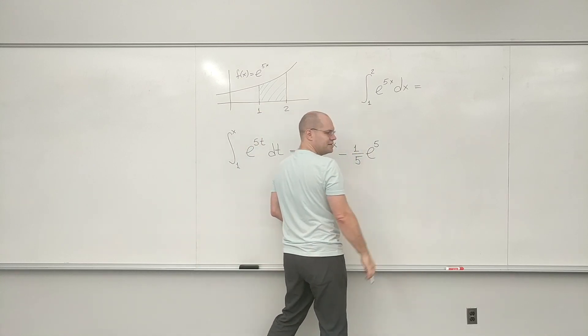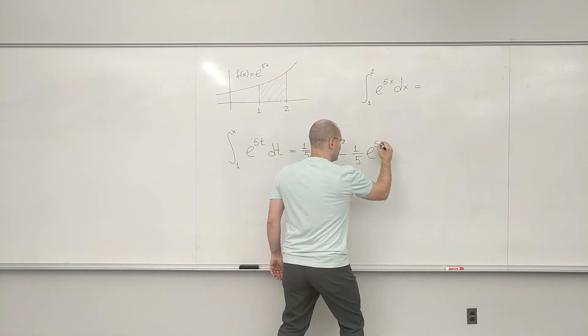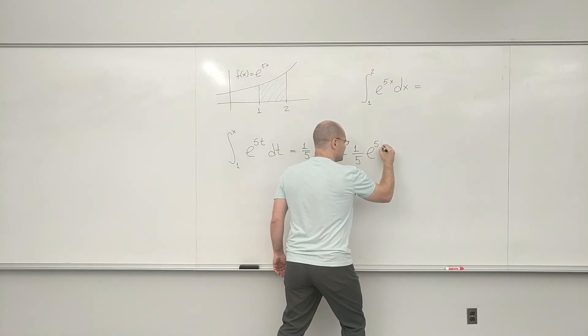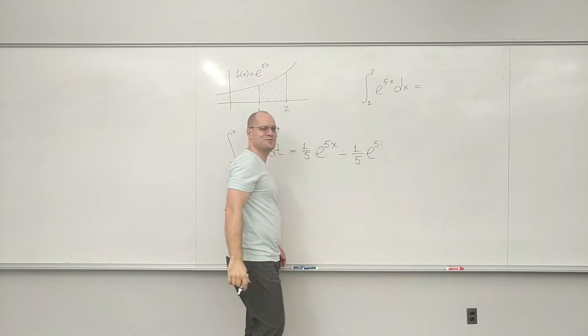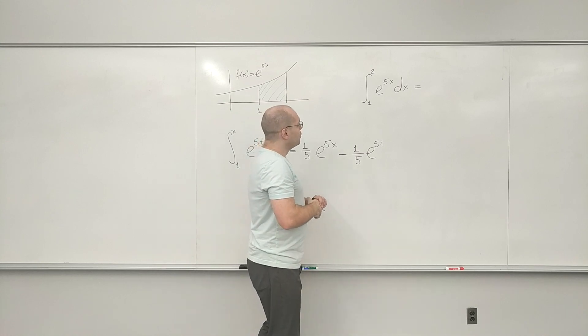Should I write times 1? No, I think this is fine. Just e to the 5, but it came from being e to the 5 times 1. I couldn't read this. e to the 5 times 1. Okay.